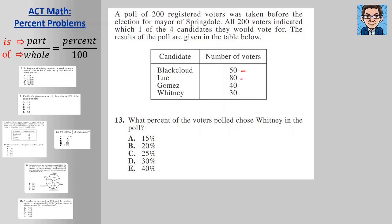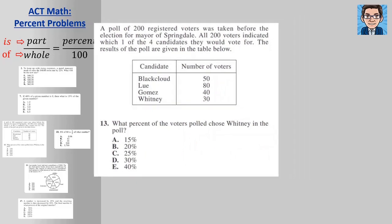All right, so we have number of voters here. We just need to know that there's 200 voters. So what percent of voters polled chose Whitney? 30 chose Whitney, 30 out of 200. We could divide that and get 0.15, which is 15 percent. We could also look at it and say 30 out of 200 would be the same as 15 out of 100, so we also get 15 percent that way as well. So the answer here is going to be 15 percent, or answer A.